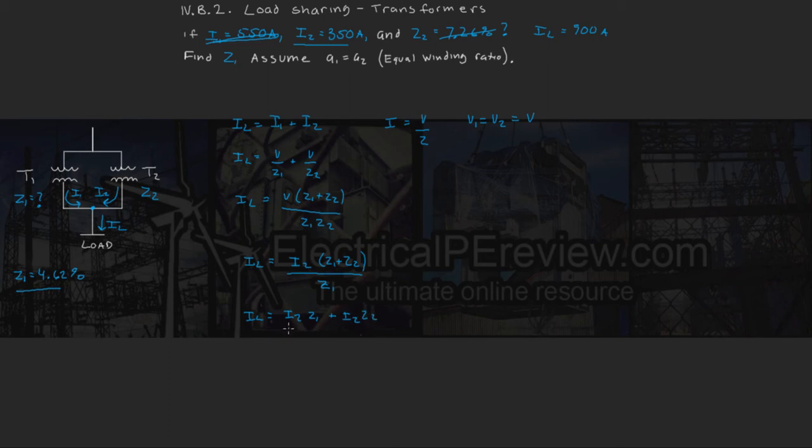We can move Z1 to the other side to have Z1 IL equals I2 Z1 plus I2 Z2.